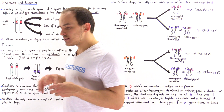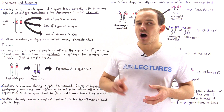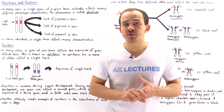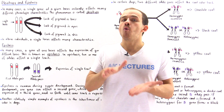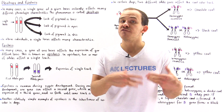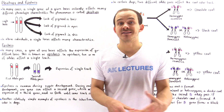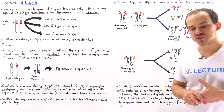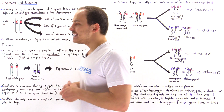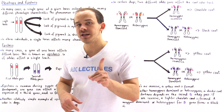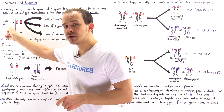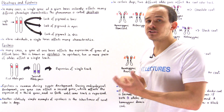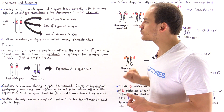Pleiotropy is the process by which a pair of alleles on a single locus on some homologous chromosome affects the expression of more than one type of trait — many different types of traits. To see exactly what we mean by that, let's consider albino individuals. In albino individuals, it's a single pair of genes at some particular locus that actually affects the expression of three different types of phenotype traits.